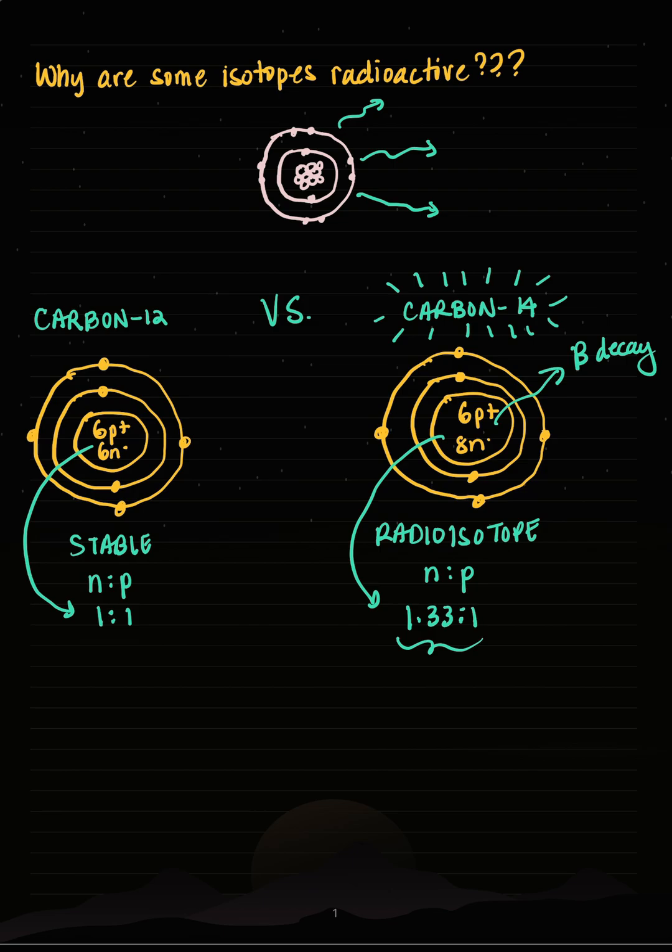But ultimately, what makes an isotope radioactive? It has to do with its nucleus, and small atoms are striving for a 1 to 1 ratio of neutrons-to-protons. Bigger atoms are striving for a 1.5 to 1 ratio of neutrons-to-protons. And if the nucleus is unstable, it can undergo alpha decay, beta decay, or gamma decay.